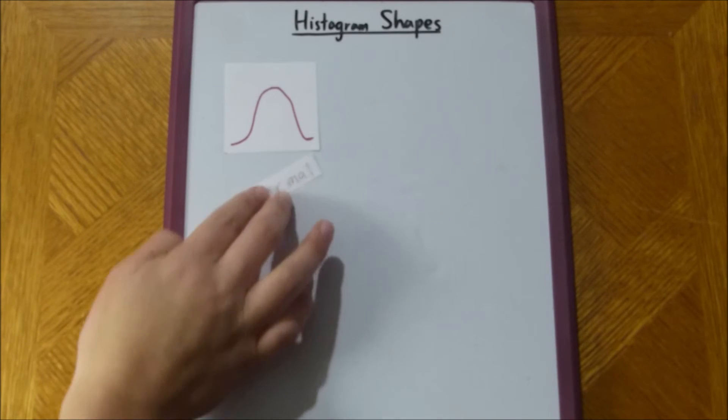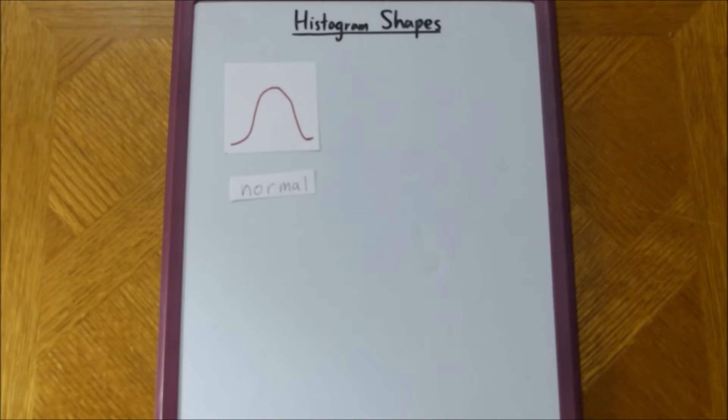Continuing on, we can describe this histogram as a normal curve. And what makes this curve normal? Well, it's not only symmetric, but also bell-shaped, right?